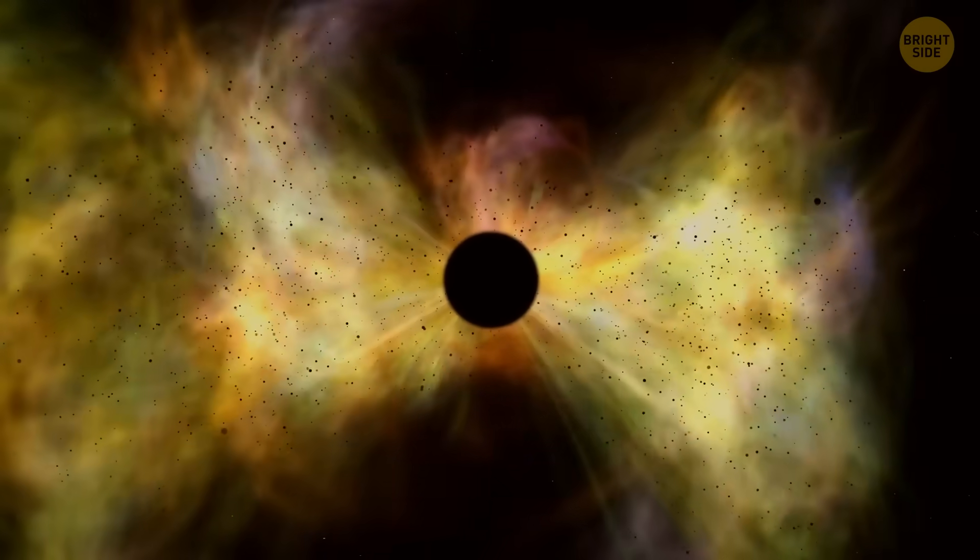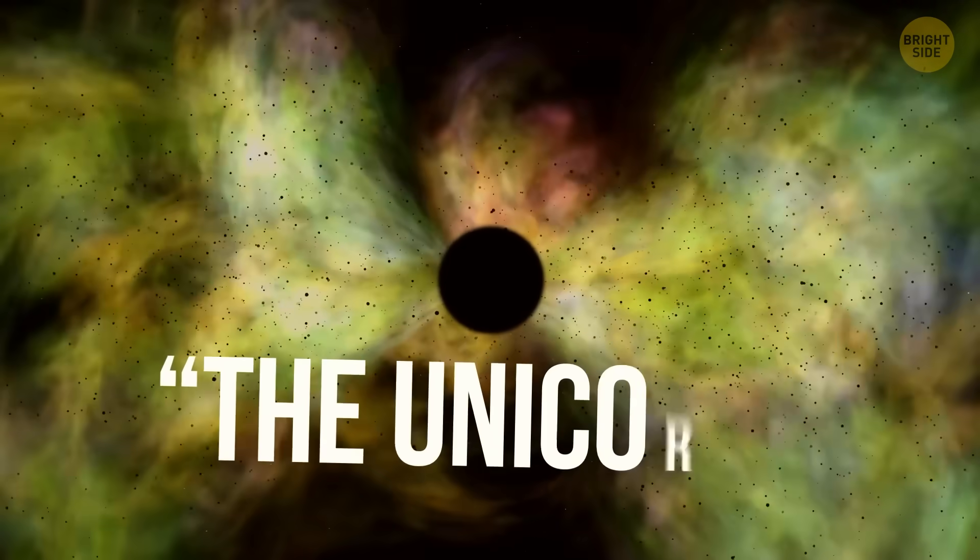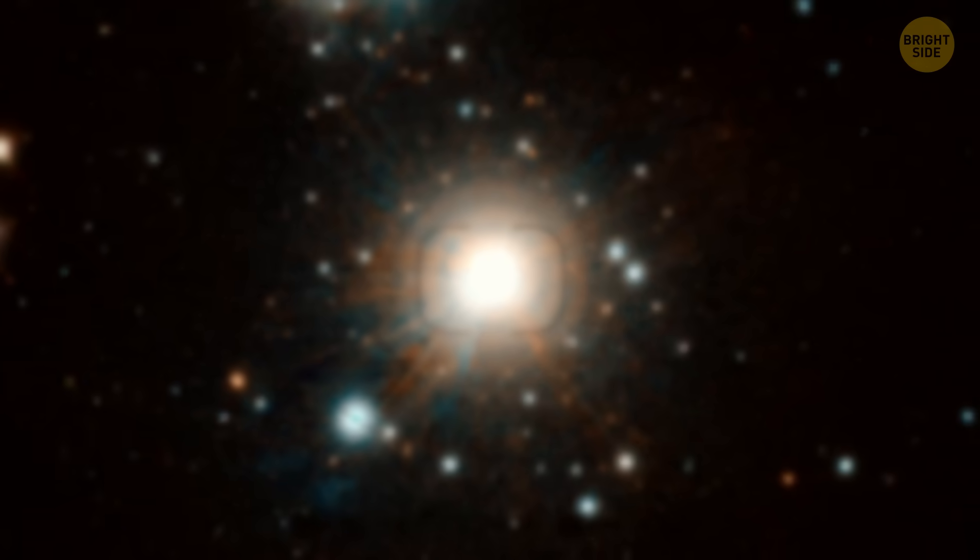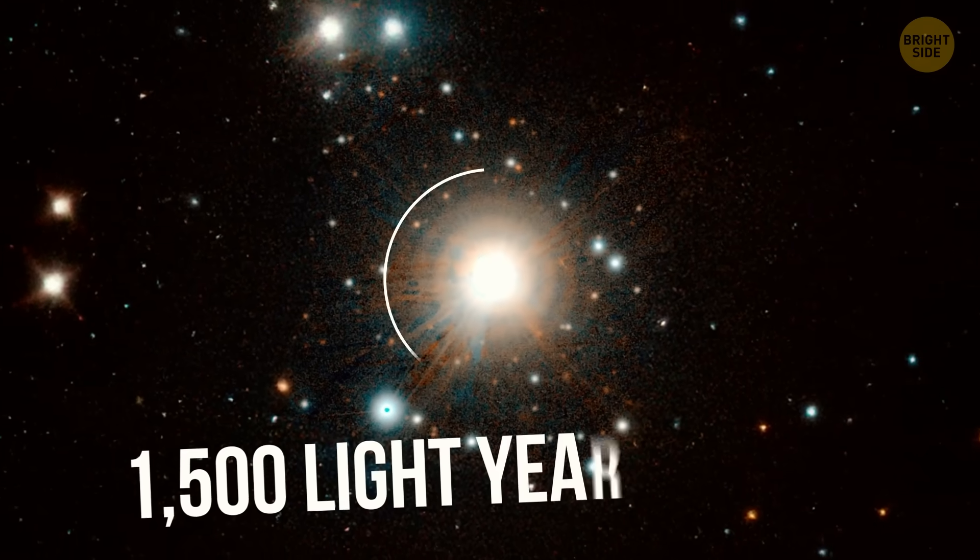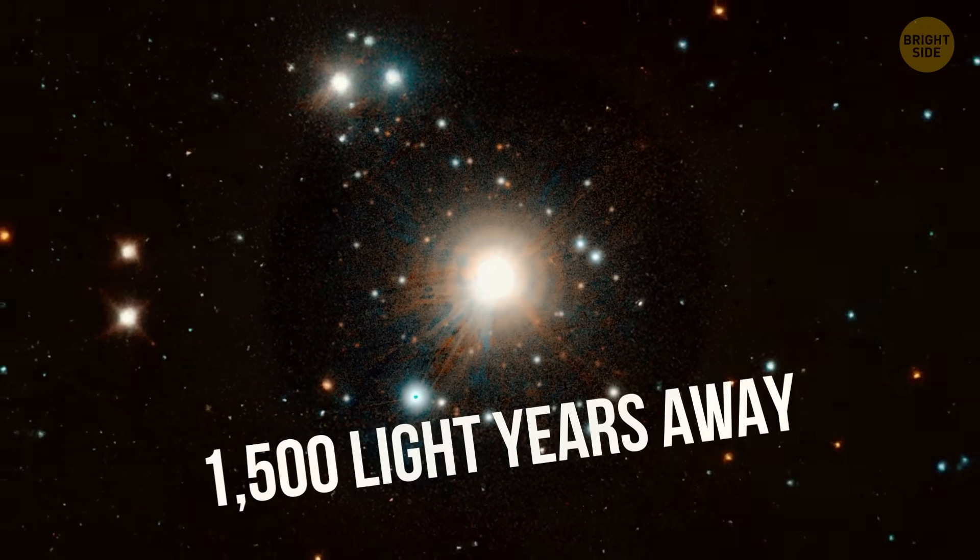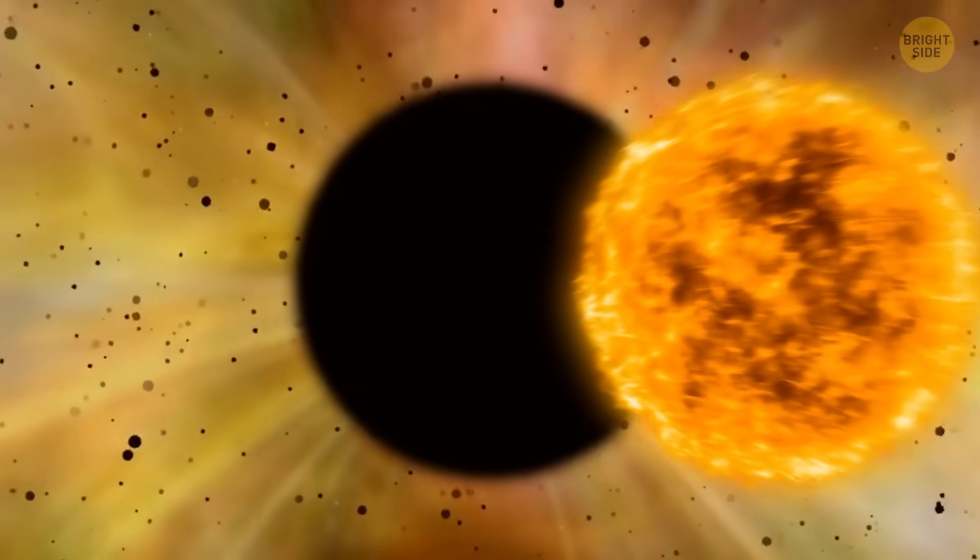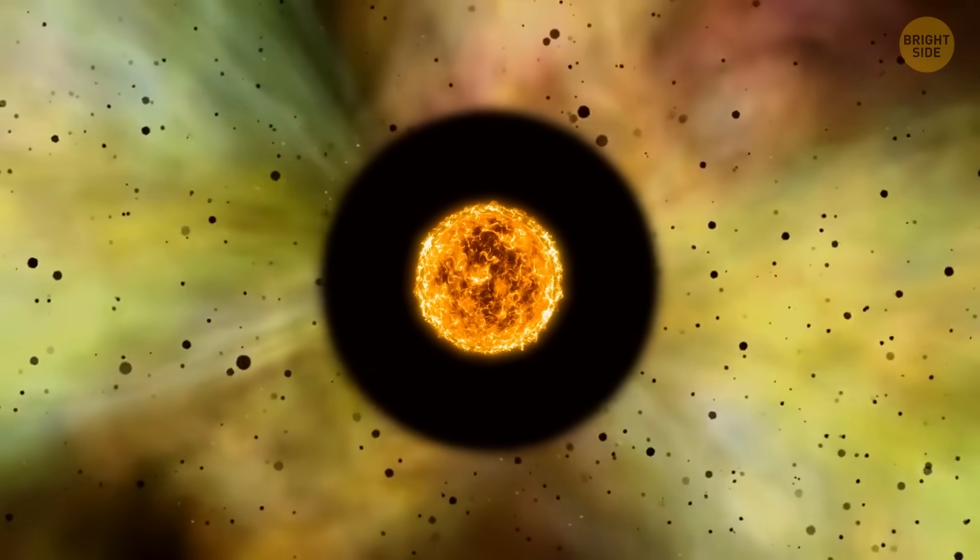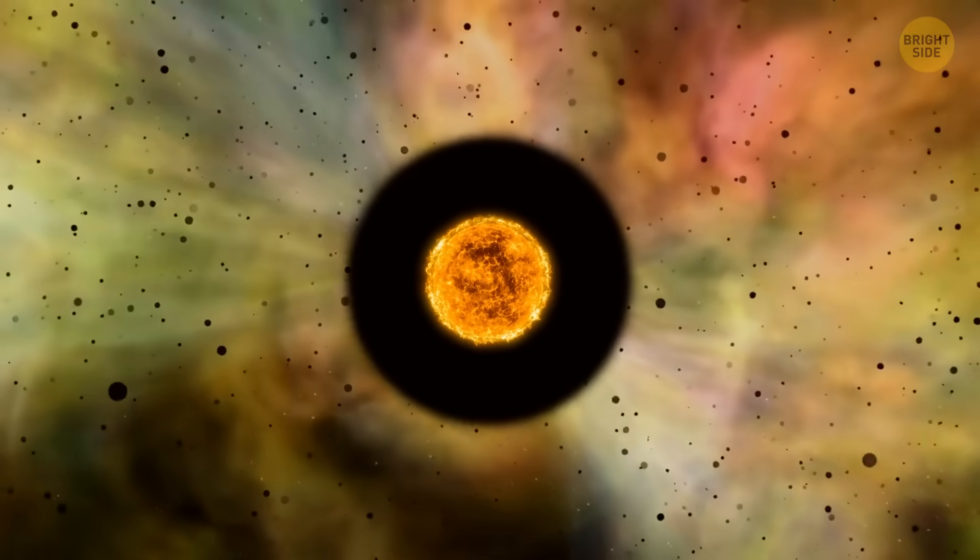The smallest black hole discovered so far has been nicknamed the unicorn. Located 1,500 light-years away from Earth, it's around 3 times the mass of our sun. But this makes it very close to the smallest possible size for a stable black hole.